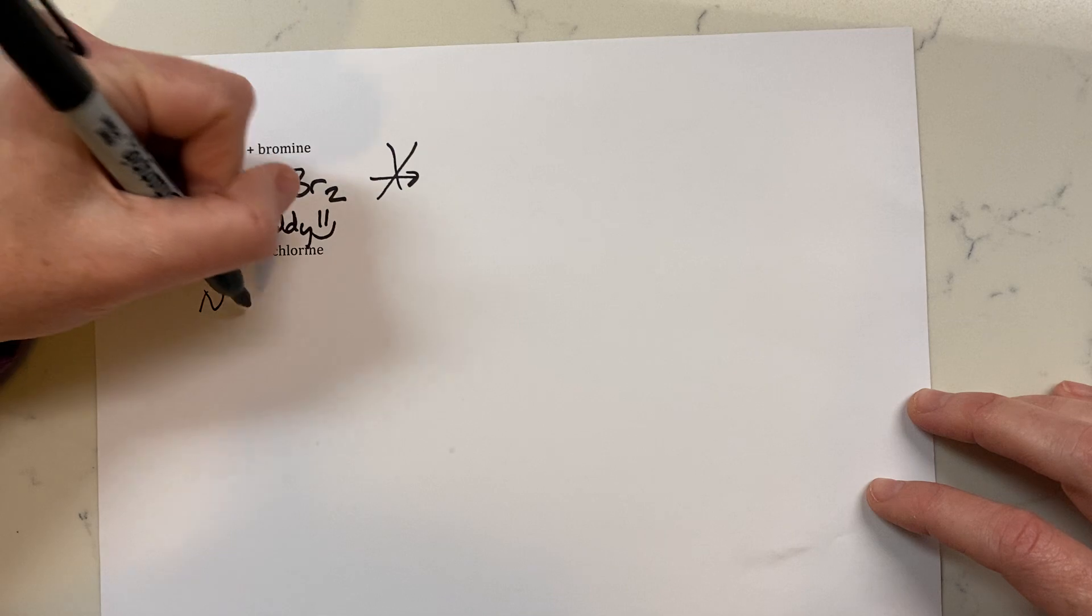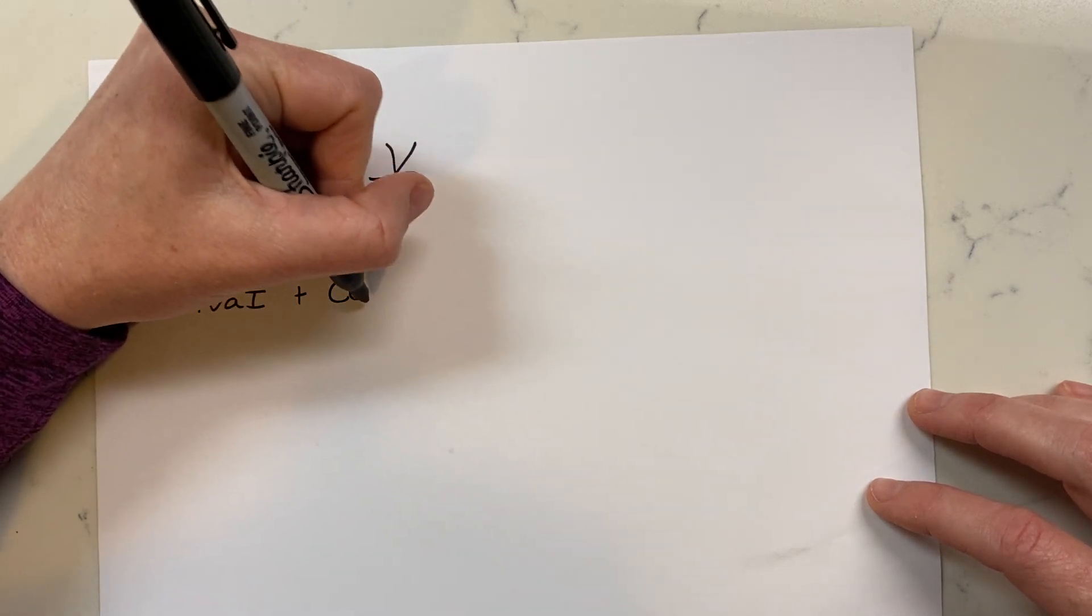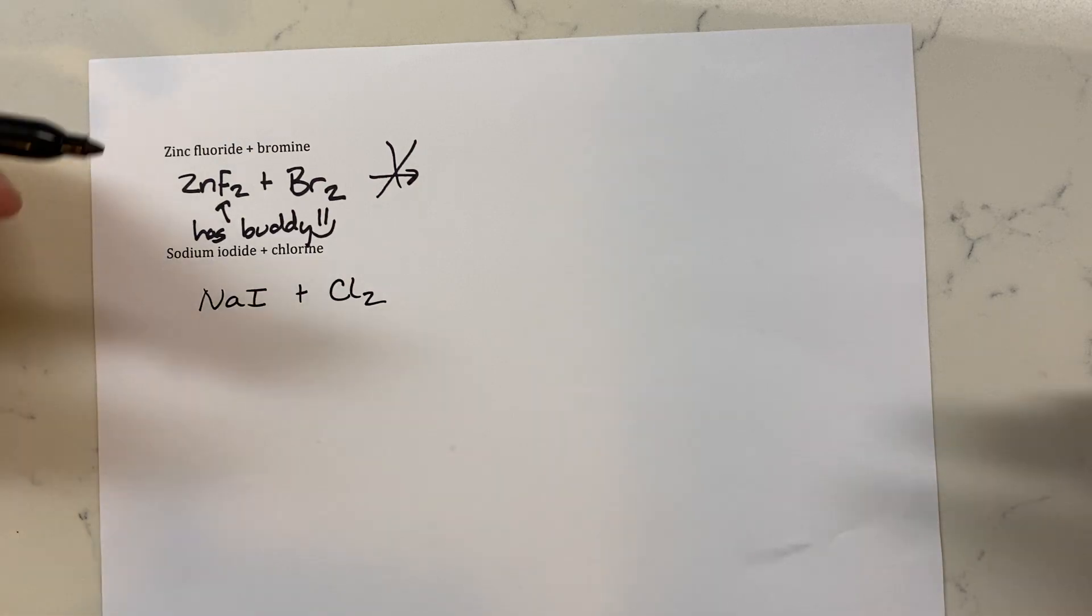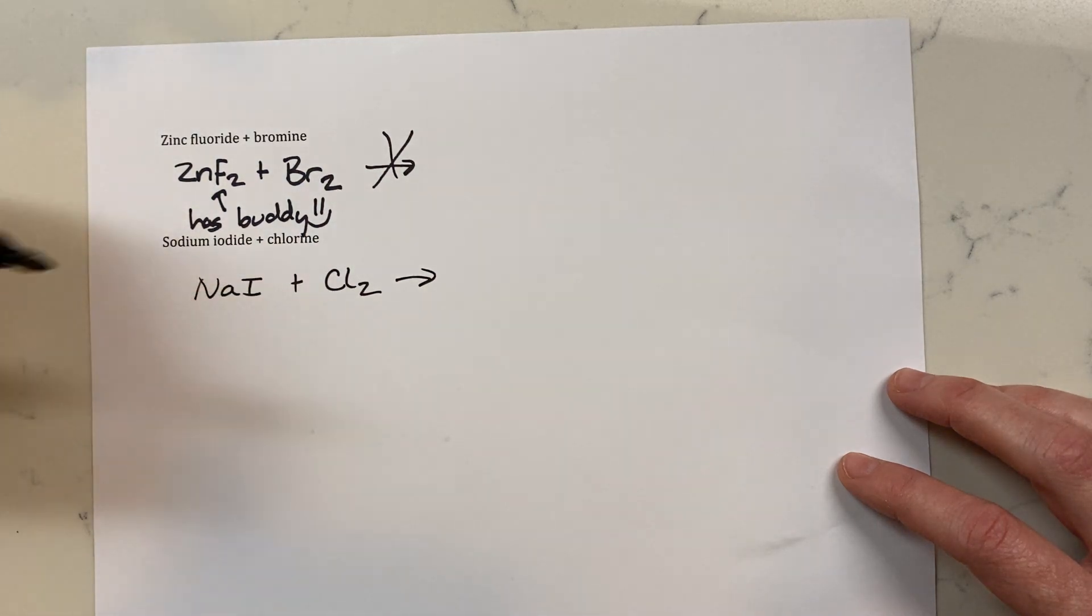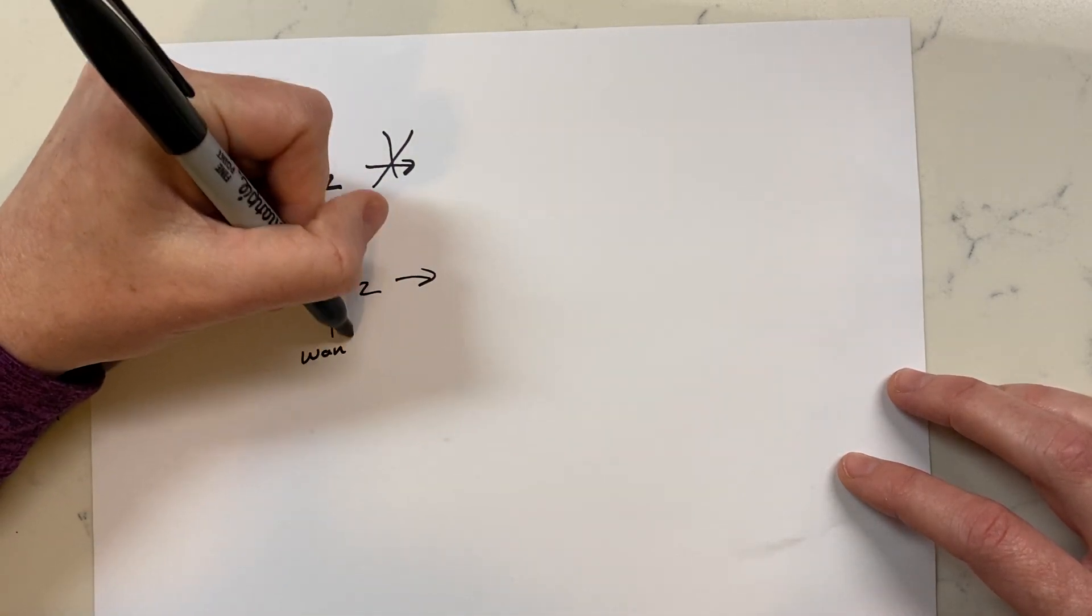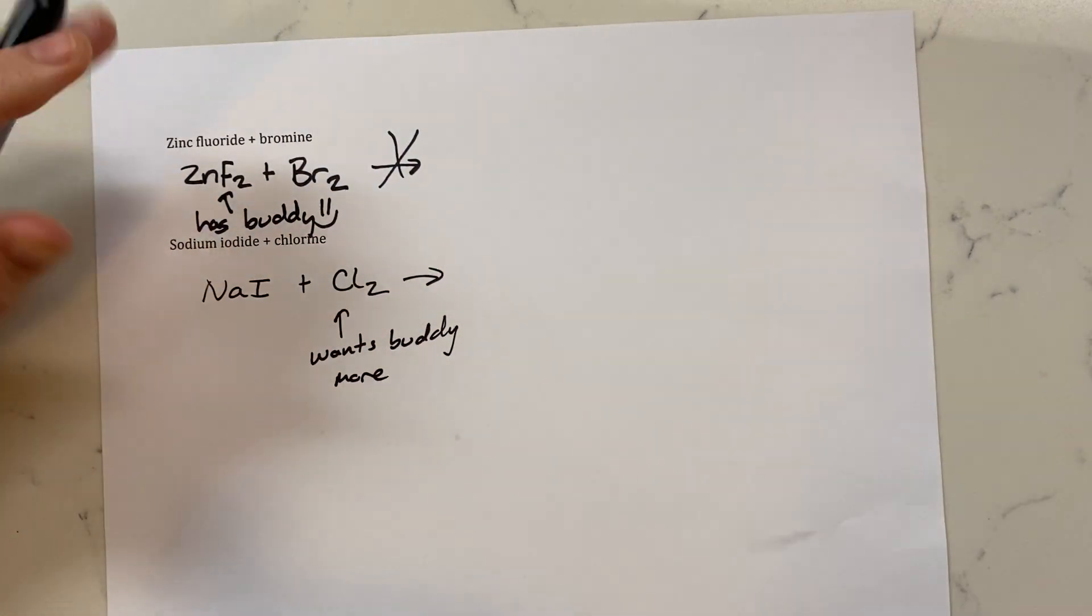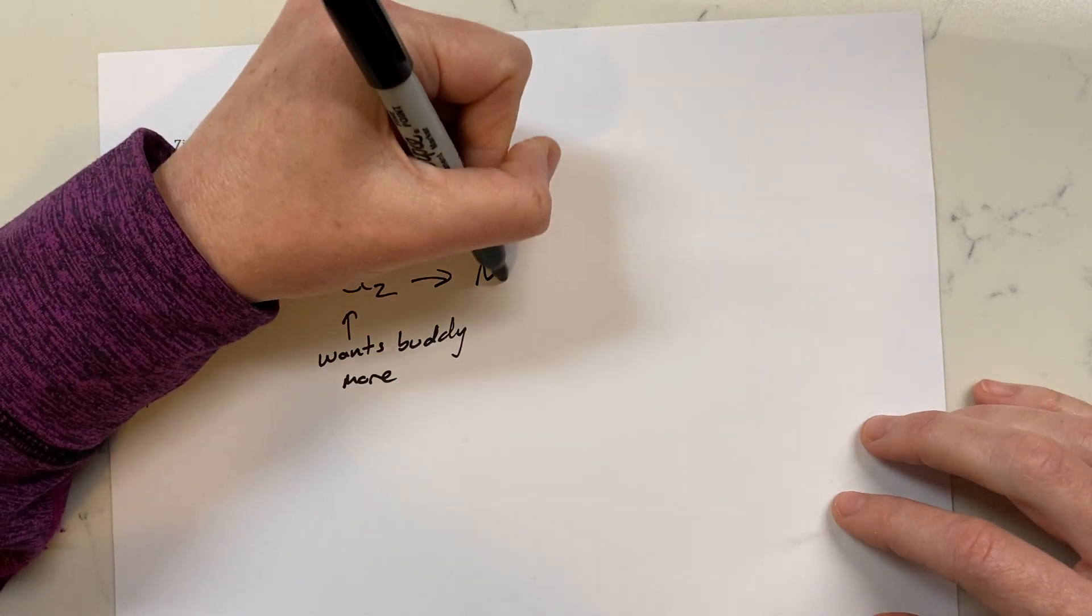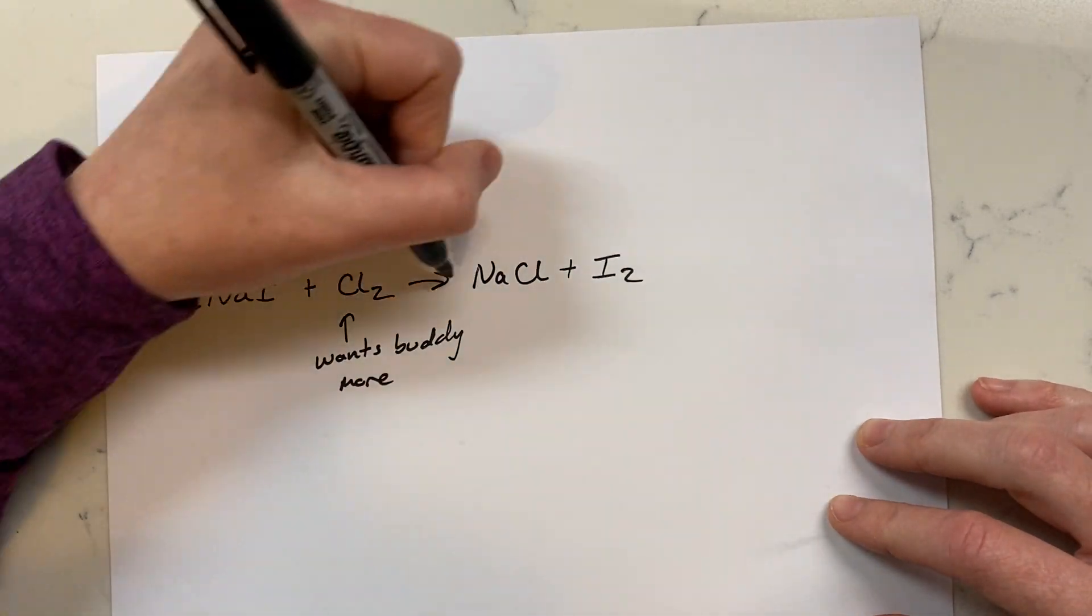Now sodium iodide and chlorine. NaI and chlorine, which again is a diatomic. And the question is, will the chlorine and the iodine switch places? What's higher on the list, iodine or chlorine? Well, freaking Claire brought ice. This one's higher. This one wants a buddy. Again, because chlorine is higher than iodine, chlorine wants a buddy more. So this reaction will occur and you'll get sodium chloride and iodine, which is also a diatomic. So you'd want to balance this reaction.